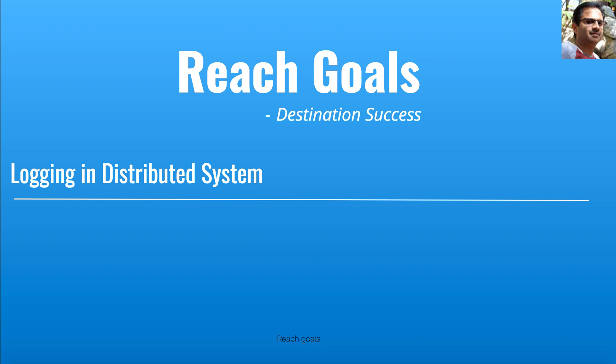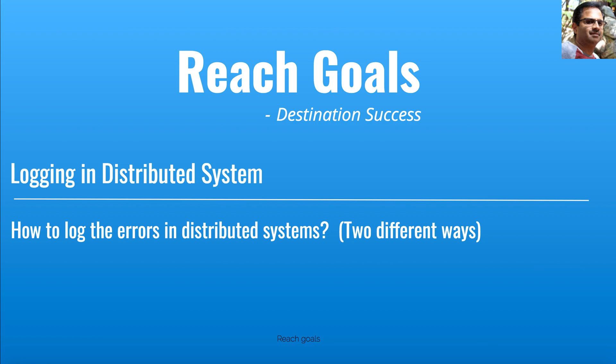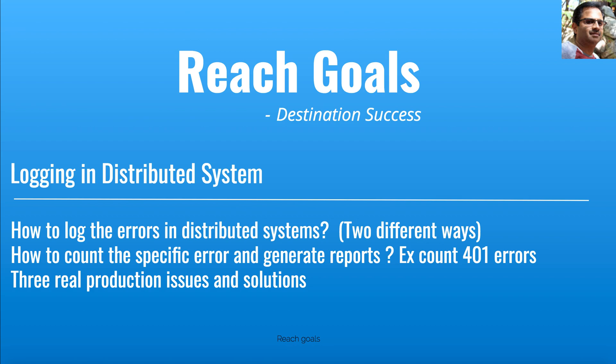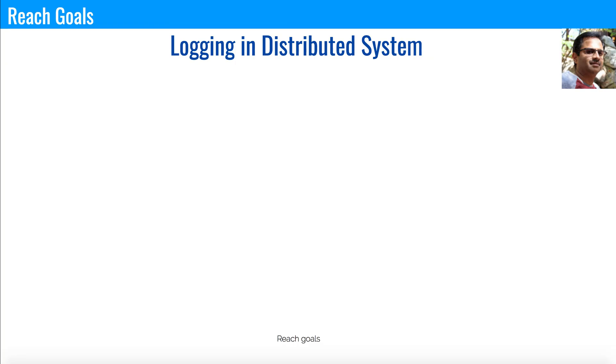Hello everyone, welcome to Reach Goals. Today I'm going to talk about logging in distributed systems. There are a lot of questions surrounding it. We'll cover how to log errors in distributed systems using two different ways, how to count specific errors and generate reports (e.g., 401 errors, order calculation errors, tax calculation errors), and finally three real production issues and their solutions.